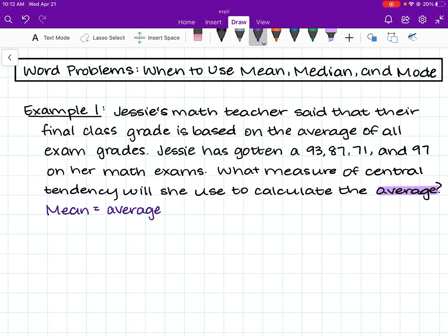So how do we find the mean? We know that the mean is the sum of all of the data points over the number of data points. So we know the mean is going to be 93 plus 87 plus 71 plus 97 divided by 4. With some quick math, we know that the numerator is equal to 348 divided by 4. And so with the calculator, we can say that 348 divided by 4 is 87. So that is the mean of this. This is the average of Jesse's math exam grades, 87.